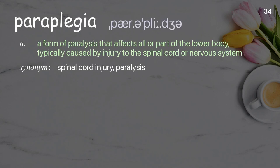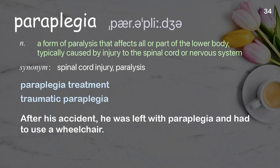Paraplegia: a form of paralysis that affects all or part of the lower body, typically caused by injury to the spinal cord or nervous system. Examples: paraplegia treatment, traumatic paraplegia. After his accident, he was left with paraplegia and had to use a wheelchair.